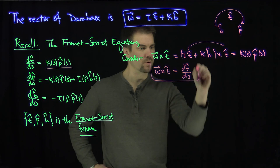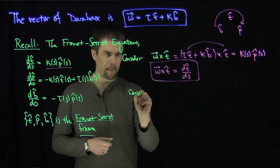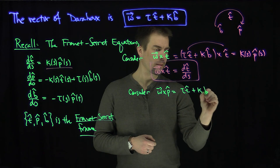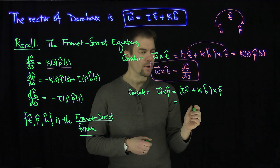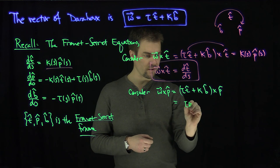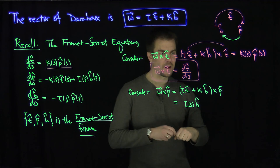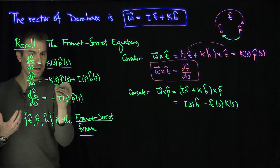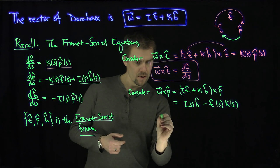So hence the Darboux vector cross t̂ equals dt/ds. That's beautiful. Next, let's consider the Darboux vector cross p̂. This is τ t̂ + κ b̂, crossed with p̂. Now t̂ × p̂ = b̂, giving τ(s) b̂(s), and b̂ × p̂ = −t̂, giving −κ(s) t̂(s). So ω × p̂ = −κ t̂ + τ b̂, which is exactly dp/ds.